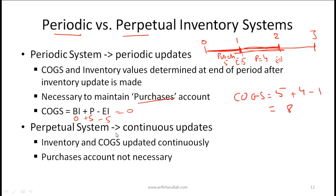With a perpetual system, you're using a computer system where you make continuous updates. As soon as you buy or sell something, inventory and cost of goods sold is updated continuously, so a purchases account is not necessary.